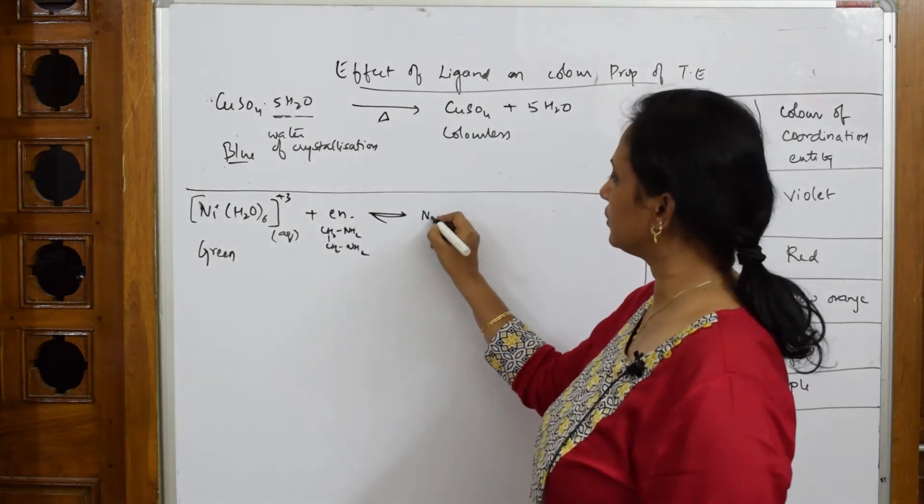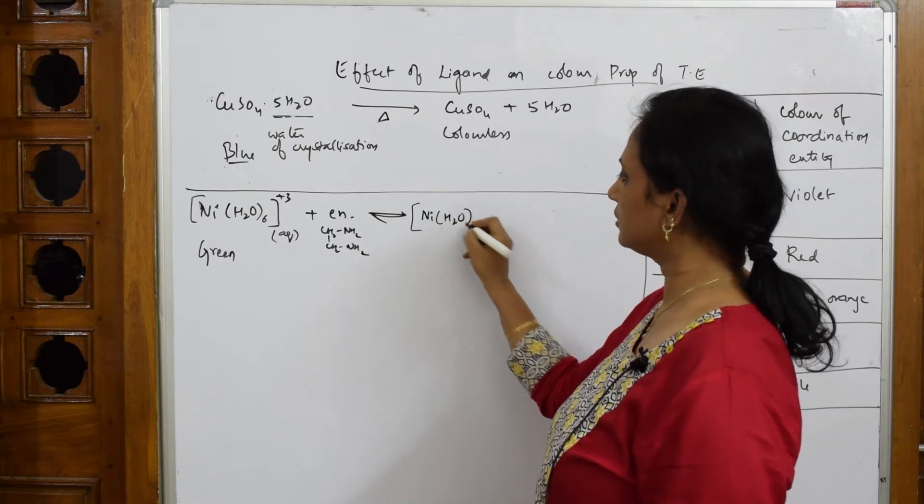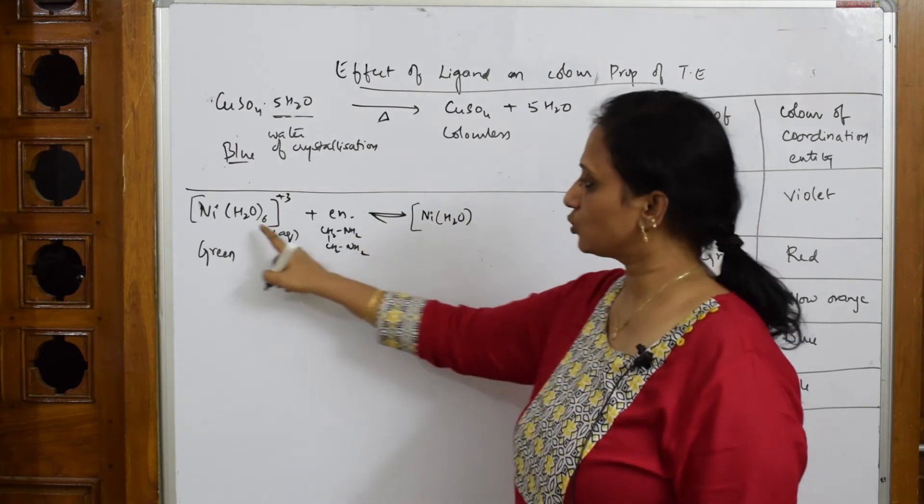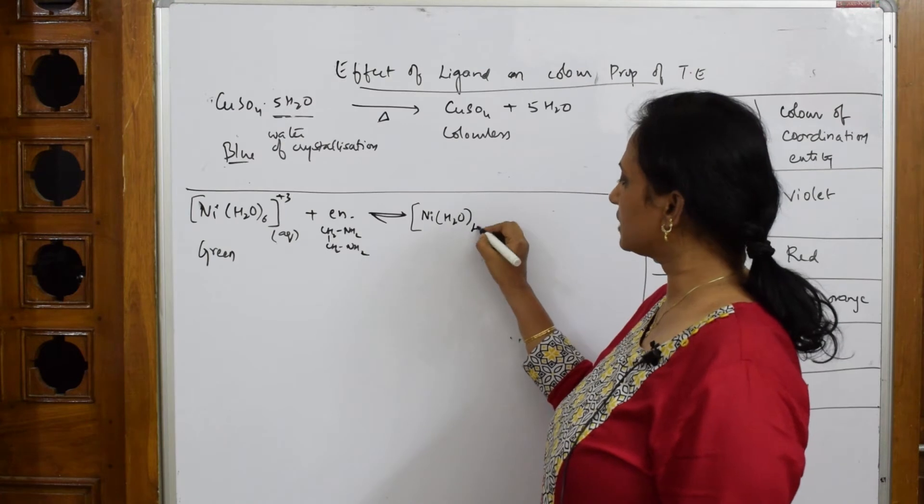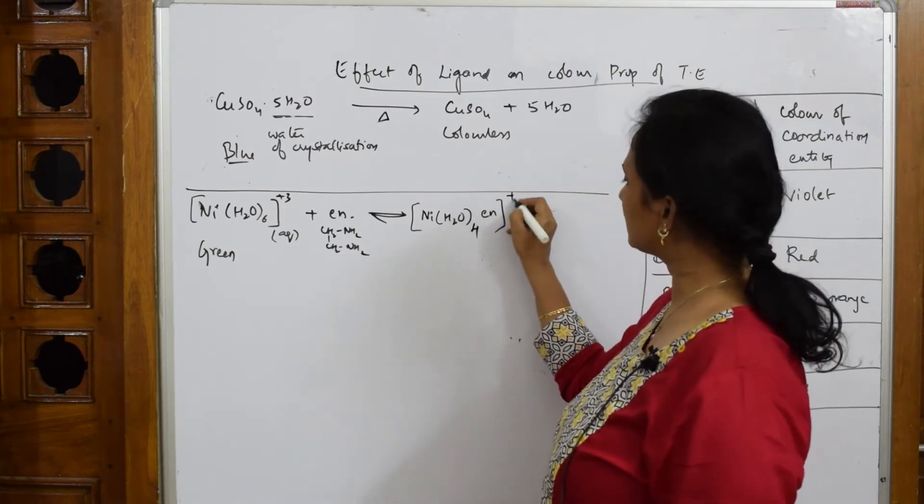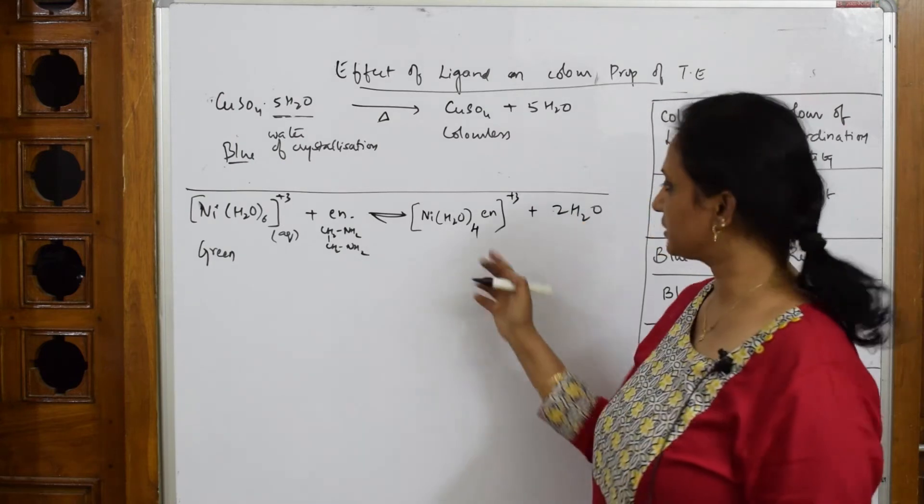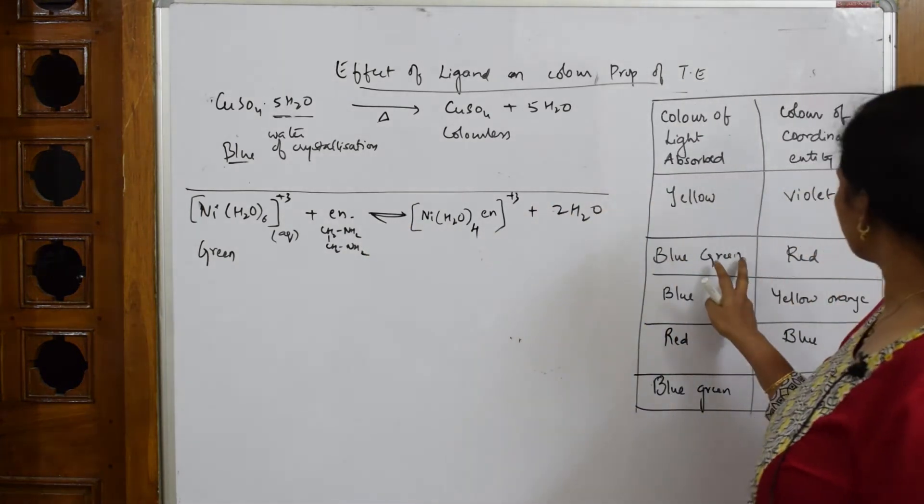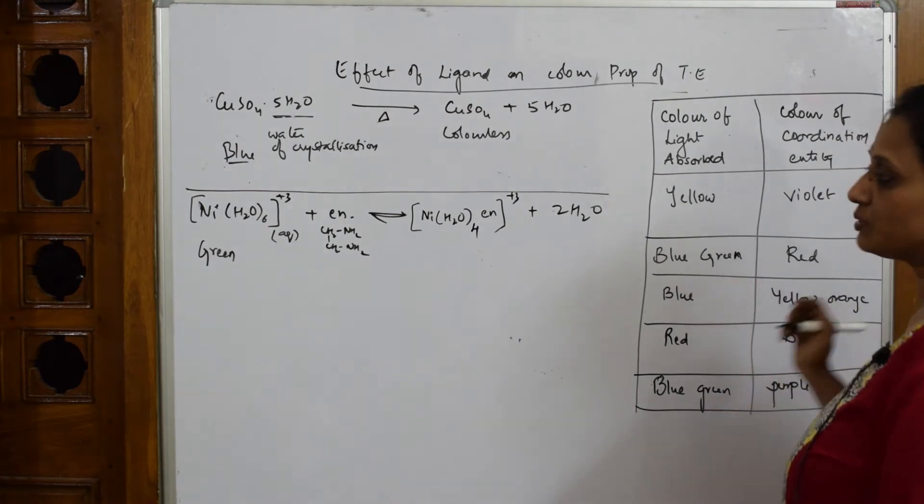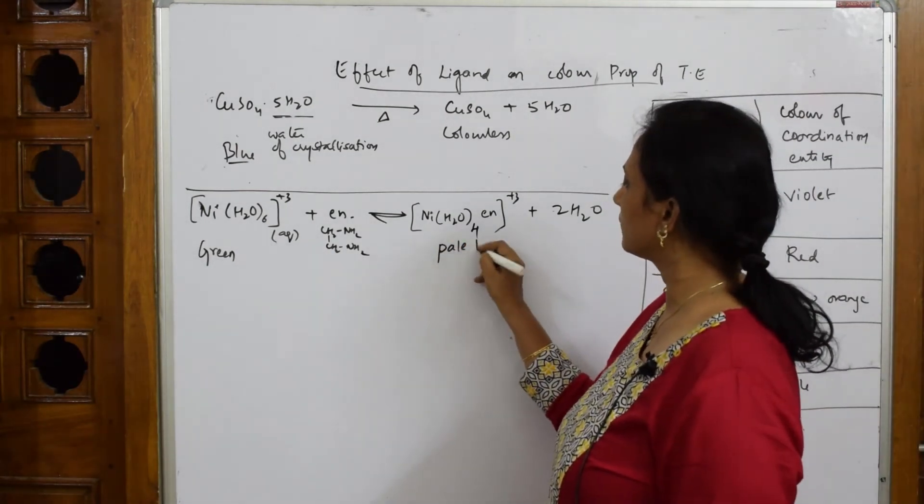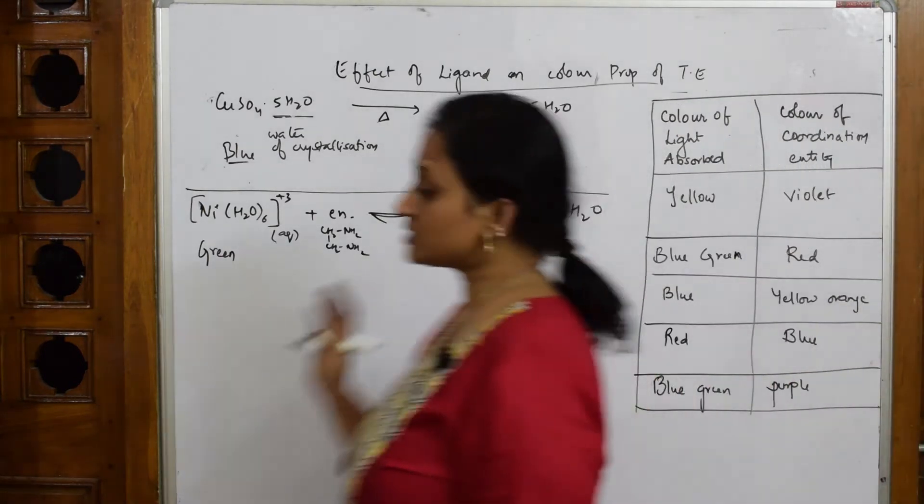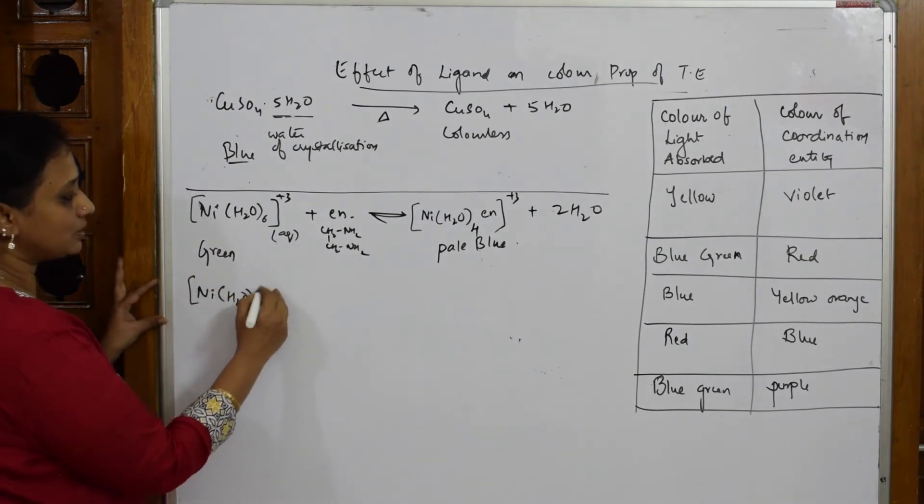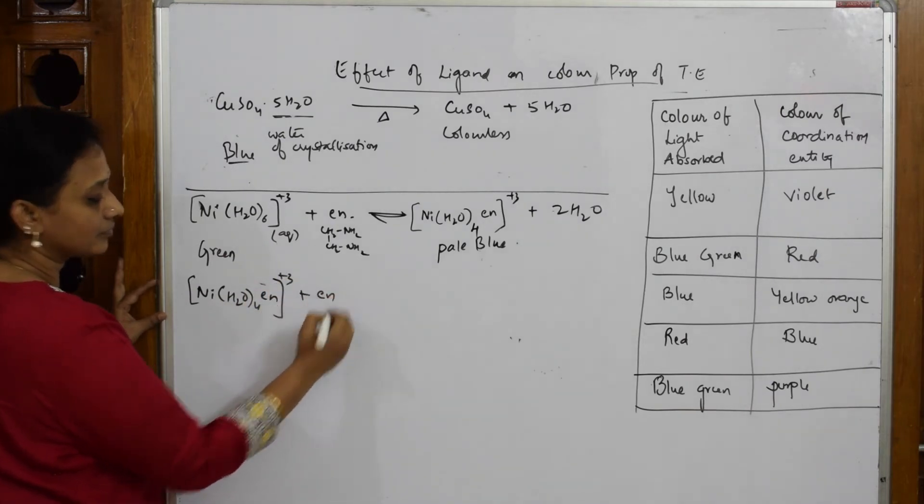When En is occupying its position, you are going to get nickel water - how many sites? Two sites. For that, two have to be replaced out. So two will attack. Total should be six. So nickel water becomes four, Ni(H2O)4(En) plus three, and two water molecules are out. Four plus two sites, coordination number six. Now the color of the complex from green gradually goes to the complementary color - it becomes pale blue.